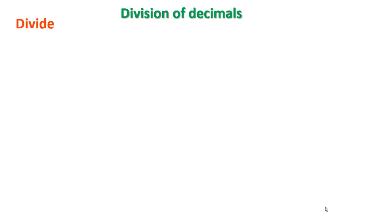Namaste students. In this video we are going to solve division of decimals. Here is the first problem: divide 24.3 by 3. First, write the dividend in the numerator and the divisor in the denominator. Start dividing the numerator from the highest place to the lowest place. The denominator is 3, so starting to divide the numerator by 3 — the highest place is 2.